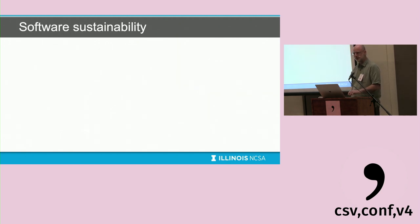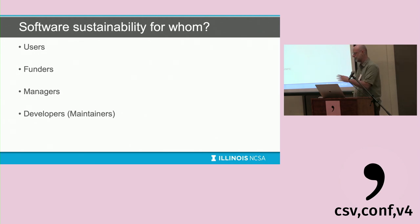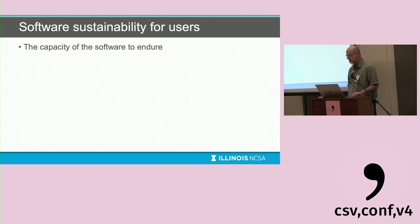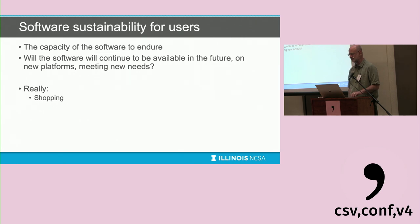For software sustainability, the first question is: who are we talking about? Different people have very different views. There's the user view, the funder view, the manager view, and the developer or maintainer view. For users, software sustainability is really the capacity of software to endure — will it continue to be available in the future on new platforms, meeting new needs? This is essentially shopping: which software should I use? It also includes elements of longevity, robustness, and support.